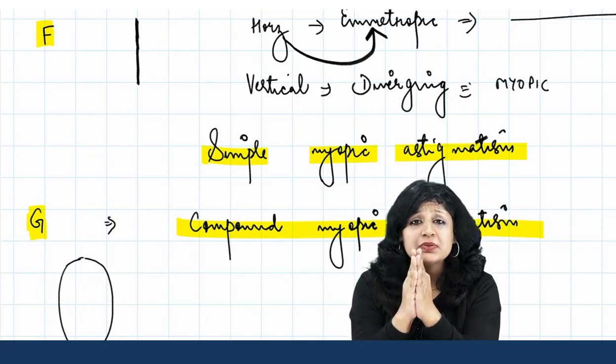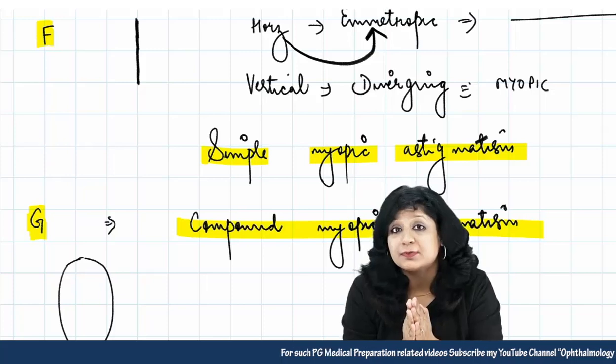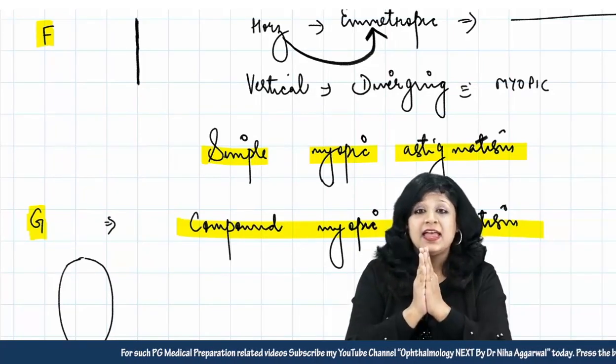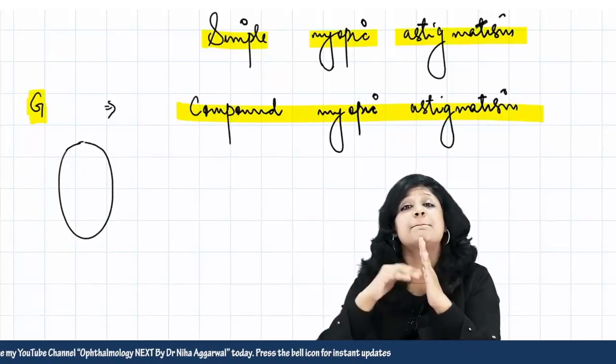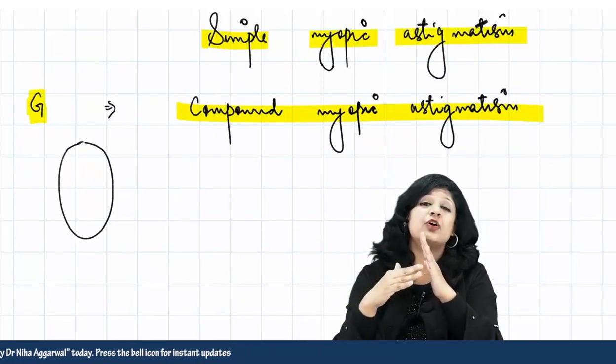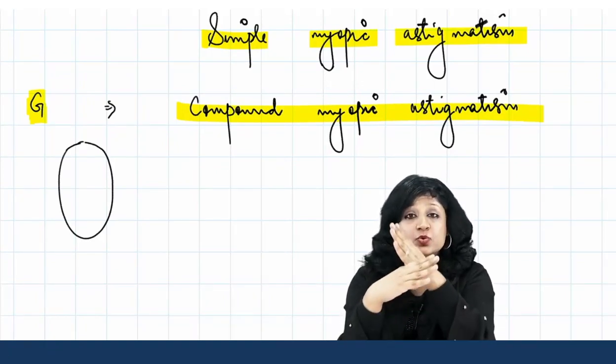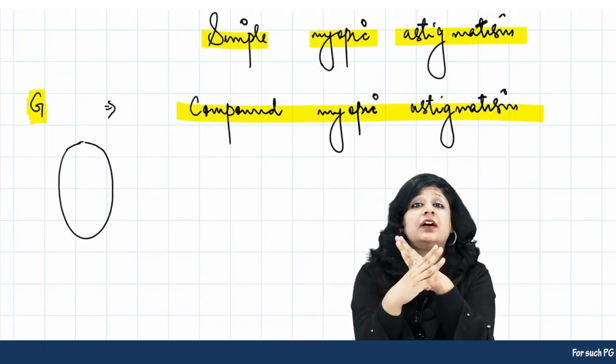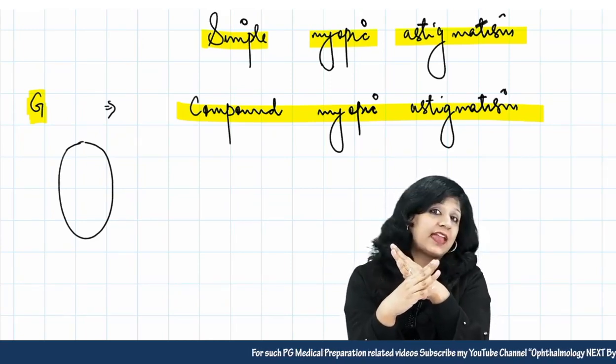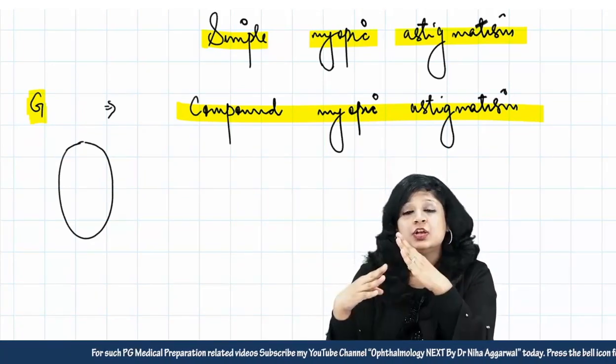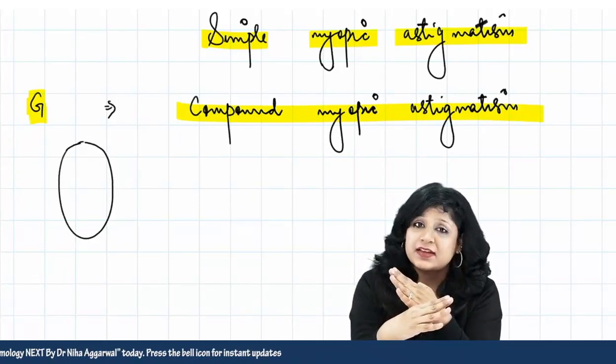Now you can easily learn this and directly solve the question in the exam. That will save your time because time is money in the examination hall. And then beyond F, not only for G but for whatever points you have beyond F, you are getting the Sturm's conoid where these two kinds of rays never come to point focus. They are two focal lines in cases of Sturm's conoid. Both are diverging. Therefore, it becomes compound myopic astigmatism.